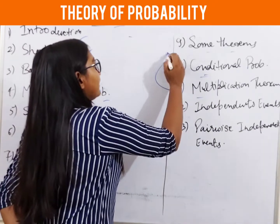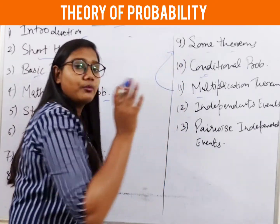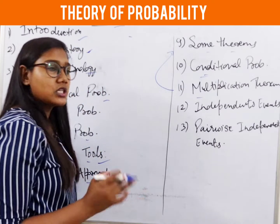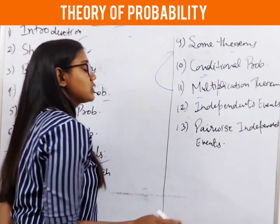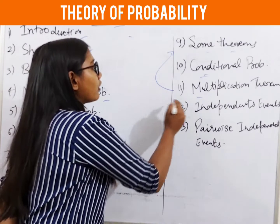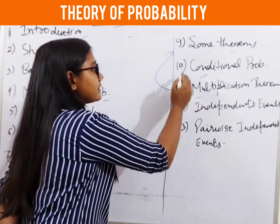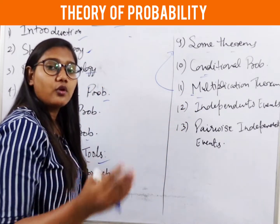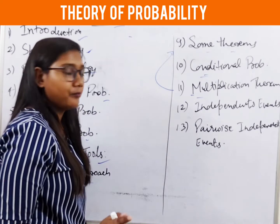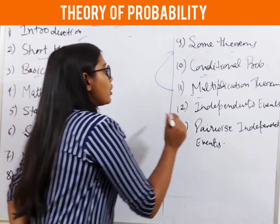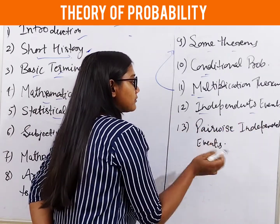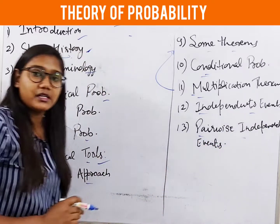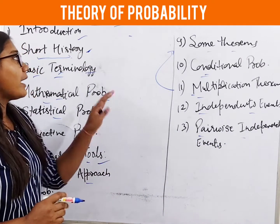Next is the Multiplication Theorem of Probability, which is related to our addition theorem. We will explain it using two sets and more. Then we have Independent Events and Pairwise Independent Events.